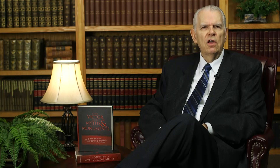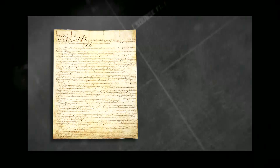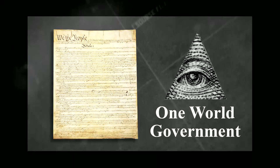The United States had to be changed from its constitutionally limited form of government. It could not be allowed to set the example for the rest of the world, since the plan was to form a one-world government under the Illuminist leaders. The United States had to be brought under their control and then used to unite the rest of the world into their orbit.